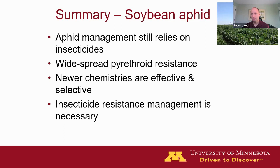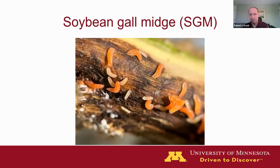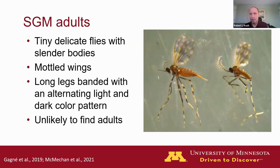Bruce Potter chimed in that at Lamberton, it may have been simply higher aphid populations with more susceptibles still in the population — different populations spread across the state can vary in response. Transitioning now to soybean gall midge: you can see some of the larvae here on an infested stem. The adults are tiny little flies, pretty nondescript, but if you look closely they have mottled colored wings and legs with distinctive dark-and-light banding.